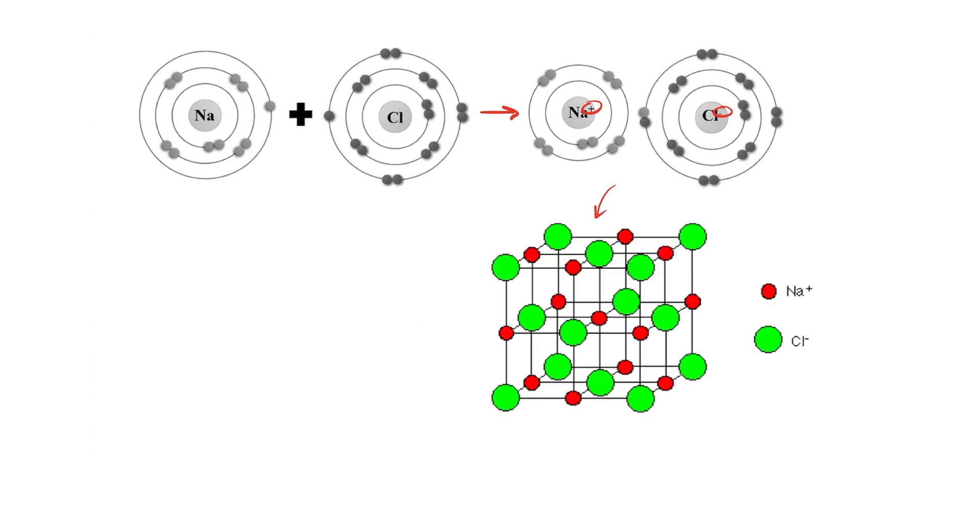Ionic compounds have structures known as giant ionic lattices. They look like this. A giant ionic lattice, like the one you can see here, which is sodium chloride, is just a fancy way of saying it's the same base units repeating over and over again. It's a load of sodium and chloride ions repeating over and over.